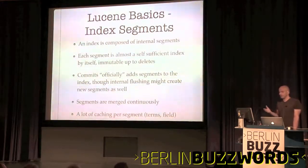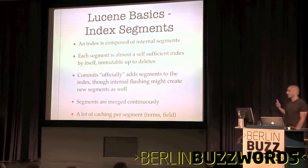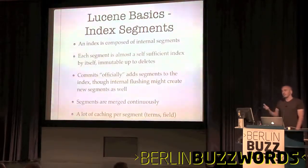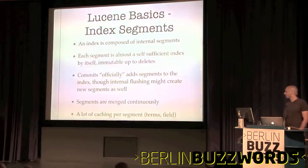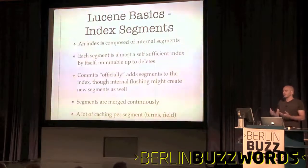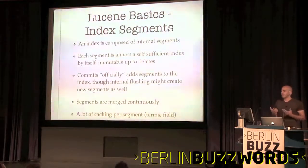Commit officially adds new segments to the index. If internally the index writer decides to do some flushing, some segments may be created but they're not officially in the index. As segments get created, they need to be kept at bay, so they are continuously merged by the Lucene process. Because segments are immutable, they are great candidates for caching — you can load all the terms, create skip lists, use field cache for sorting and custom scoring, and you don't have to reload it every time.